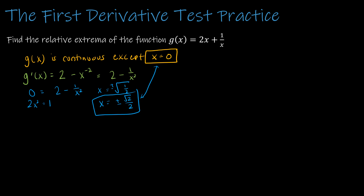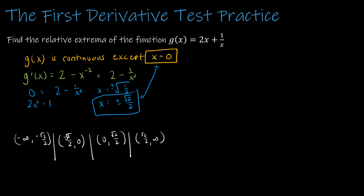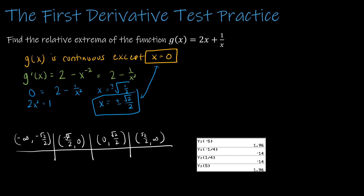We divide the domain into four intervals: negative infinity to −√2/2, −√2/2 to 0, 0 to √2/2, and √2/2 to infinity. To determine the sign of g′ on each interval, you can plug the derivative into your calculator as y₂ and evaluate at test points: −5 gives positive, −1/4 gives negative, 1/4 gives positive, and 5 gives positive. This lets you determine the intervals of increase and decrease efficiently.